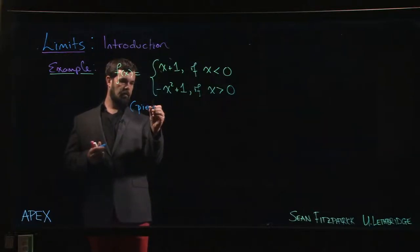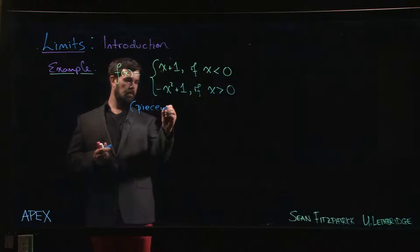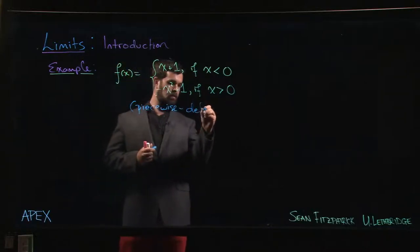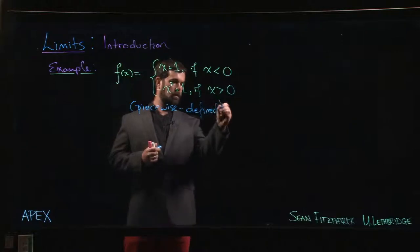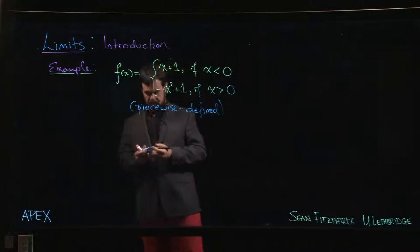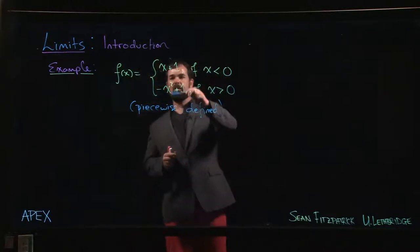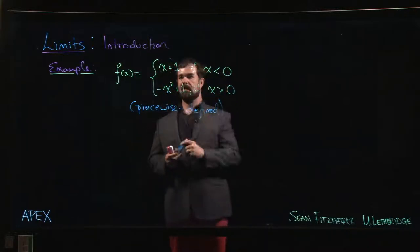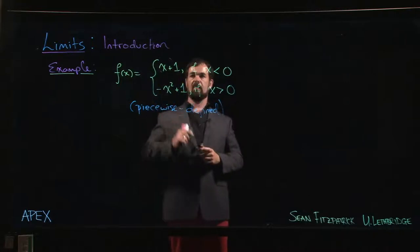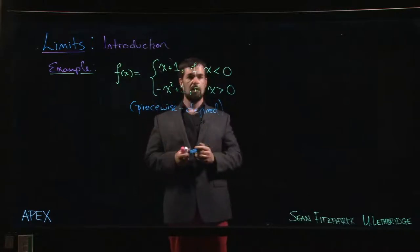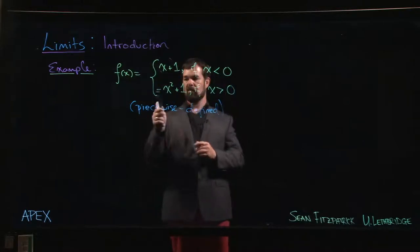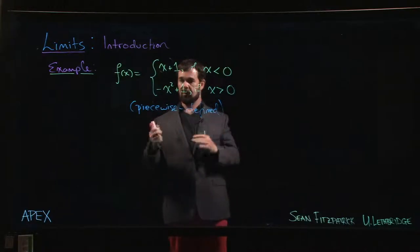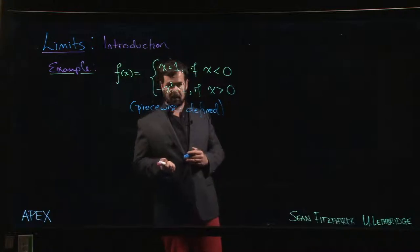This means that the function is given by different expressions for different values of x. So for negative x values it's a linear function given by x plus 1. For positive x values it's given by this quadratic expression here. Two different expressions depending on whether x is positive or negative.